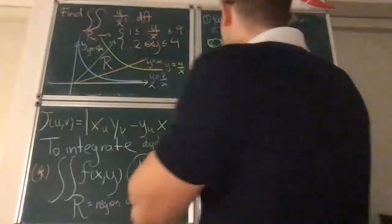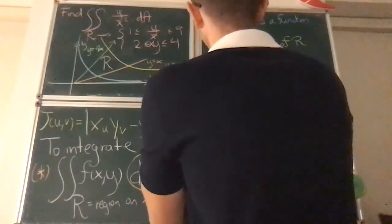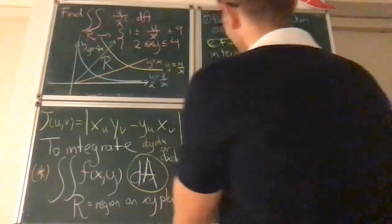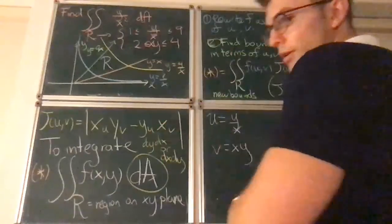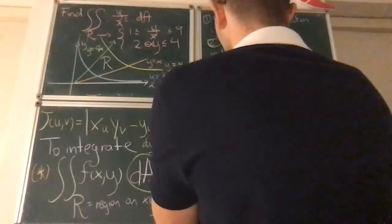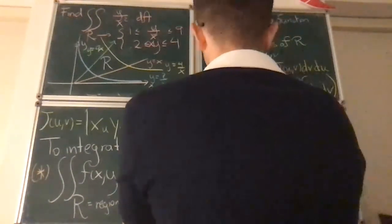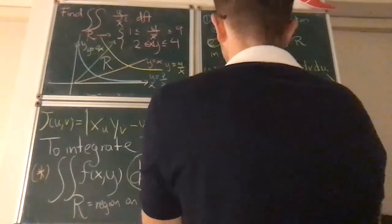Now, what change of variables do you use? You basically use a change of variables which makes these equations easy to work with. So the easiest thing to do is to call u y over x and v x times y. So in this way, the inequalities become 1 is less than u less than 9, and 2 is less than v less than 4.